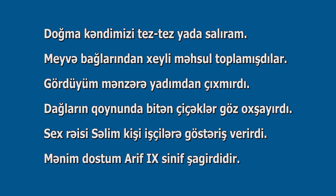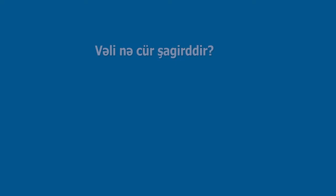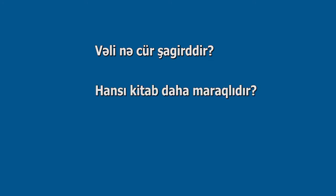Mənim dostum Arif 9-cu sinif şagirdidir. Necə, nə cür, hansı, nə qədər, neçənci kimi sual əvəzlikləri də cümlədə təyin olur. Yəni, təyinin sualları da təyin kimi götürülür. Nümunələr: Vəli nə cür şagirddir? Hansı kitab daha maraqlıdır? Bu qabda neçə alma var? Nitq hissələri ilə ifadə olunan təyinlər sadə, söz birləşmələri ilə ifadə olunan təyinlər isə mürəkkəb olur.